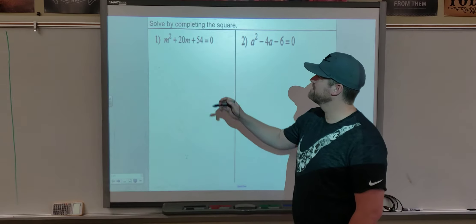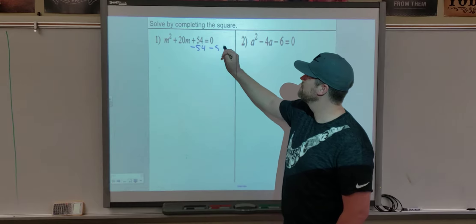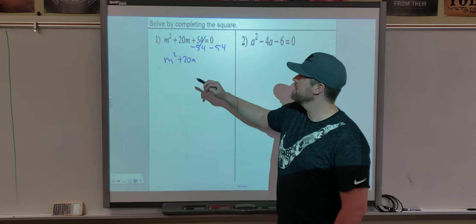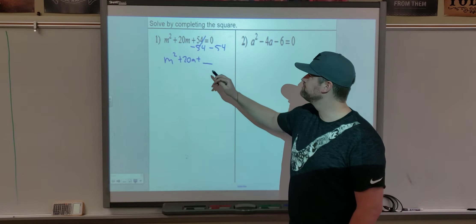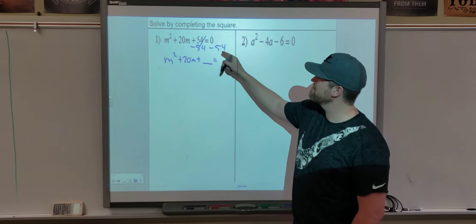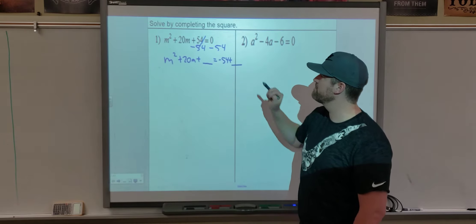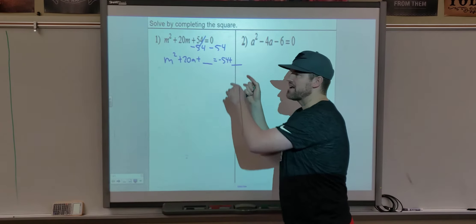Starting off, completing the square. Our first step is we need the C value to be moved to the other side. So we get m squared plus 20m. And then we're going to add in a new C value. The other side of this problem is now negative 54 plus whatever that new C value is going to be.